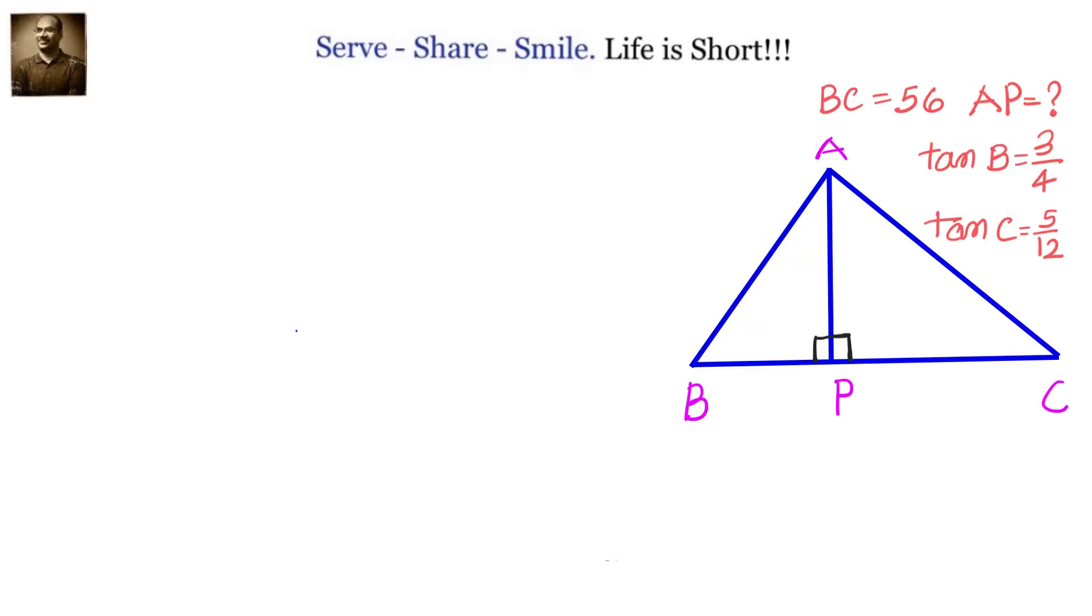Hello friends, welcome back. Let us look at this 10th grade trigonometry problem. In triangle ABC, AP is perpendicular to BC, and BC is 56 centimeters. We have to find AP. We have been given tan B equals 3 by 4 and tan C equals 5 by 12.